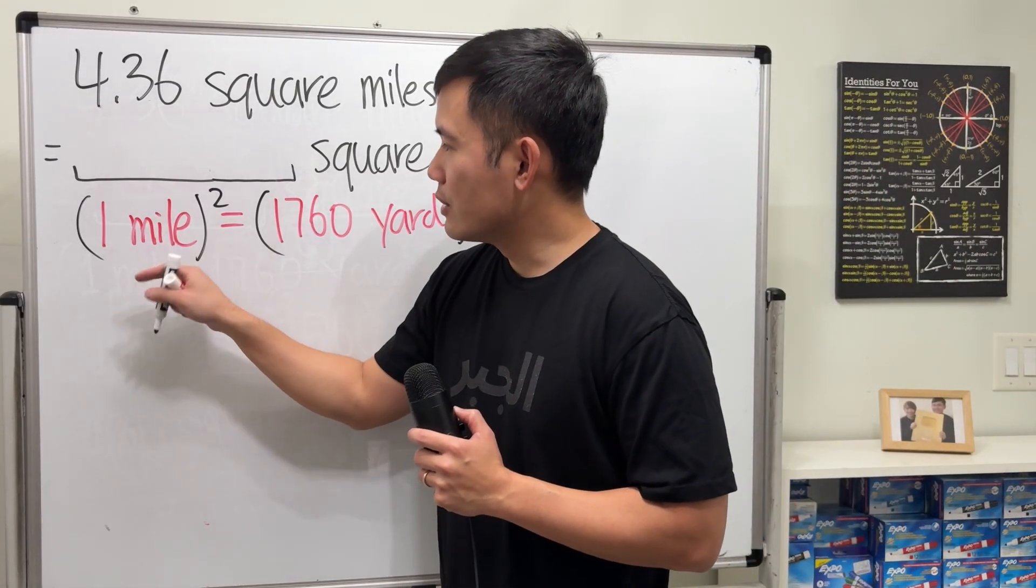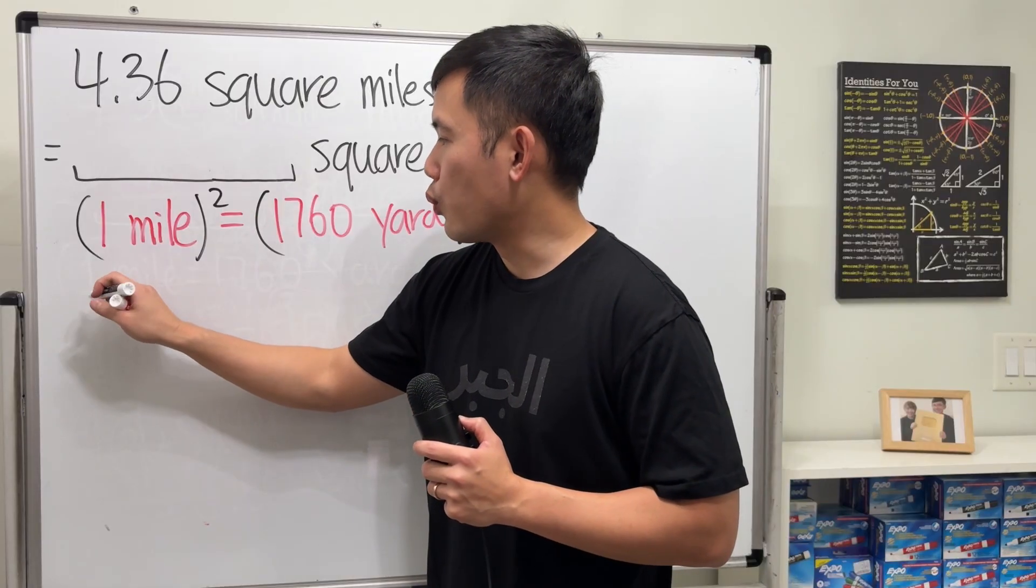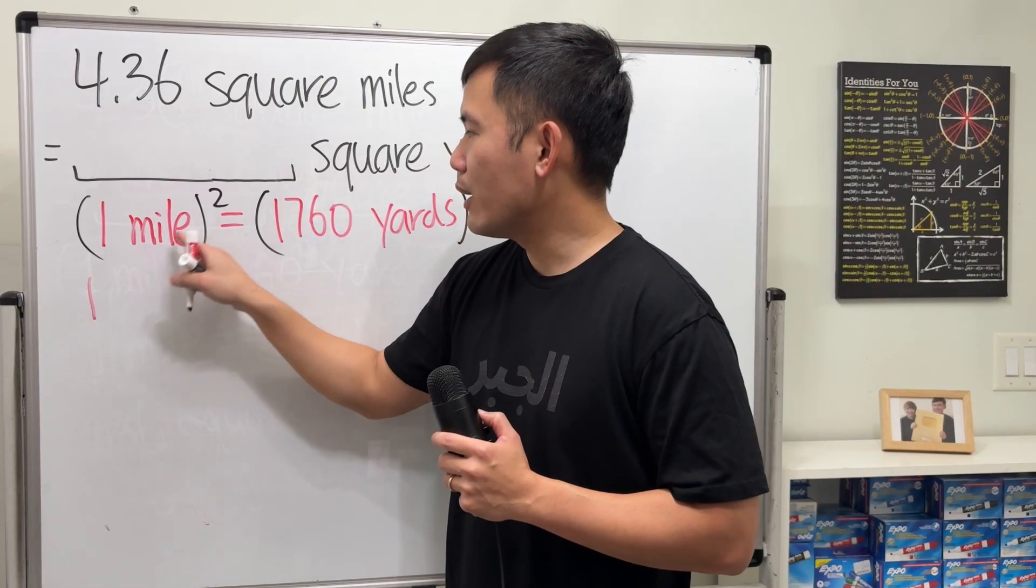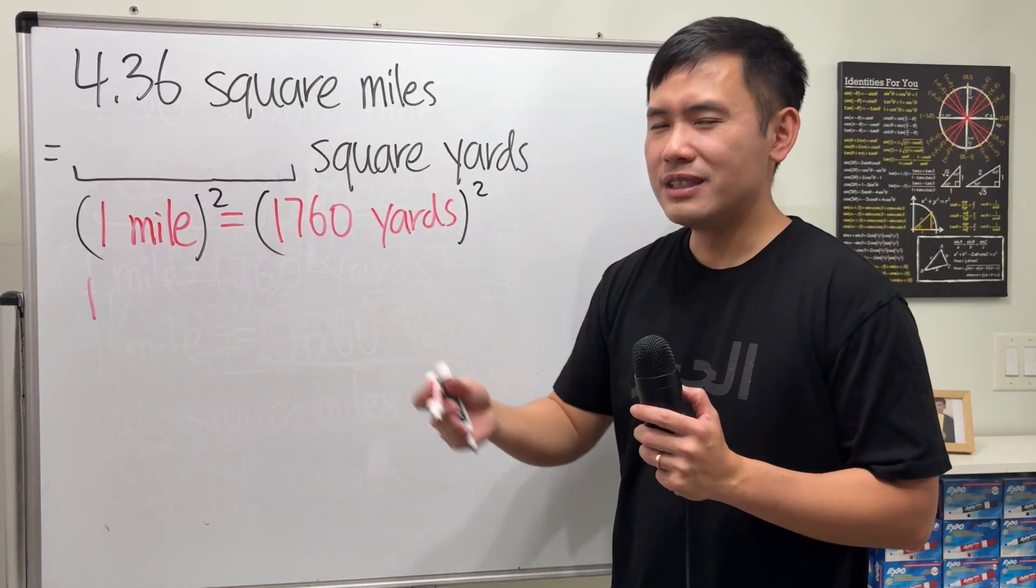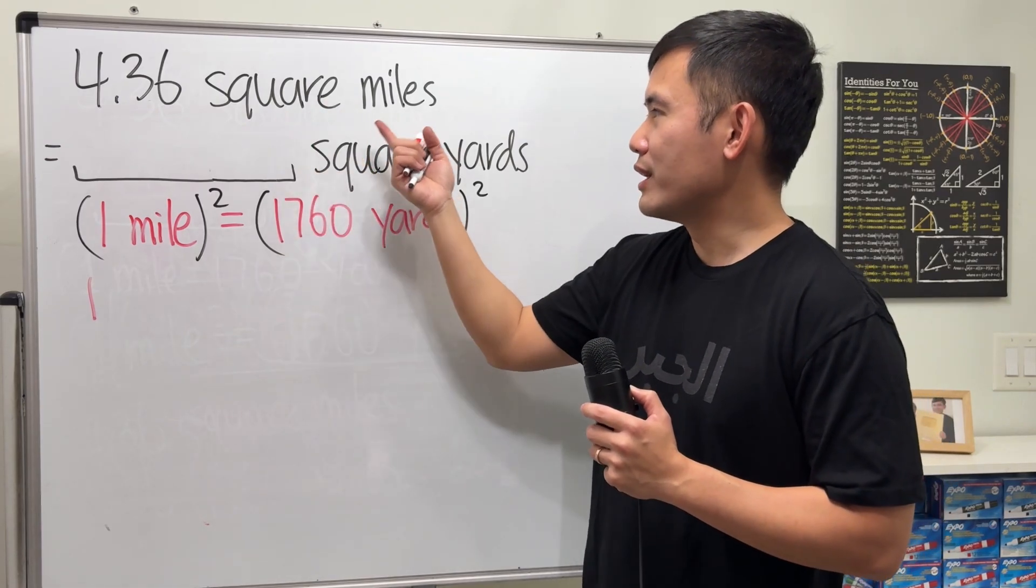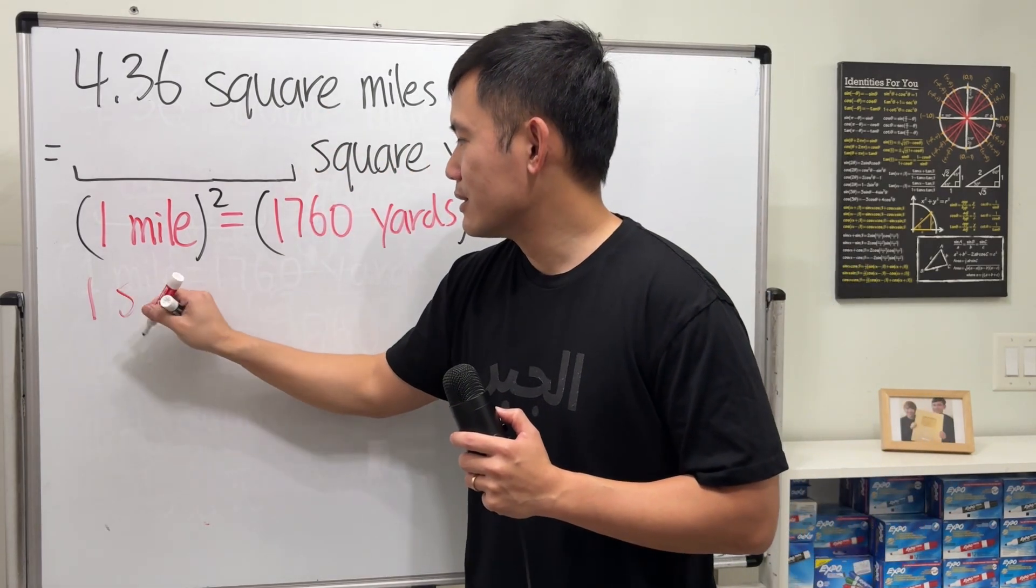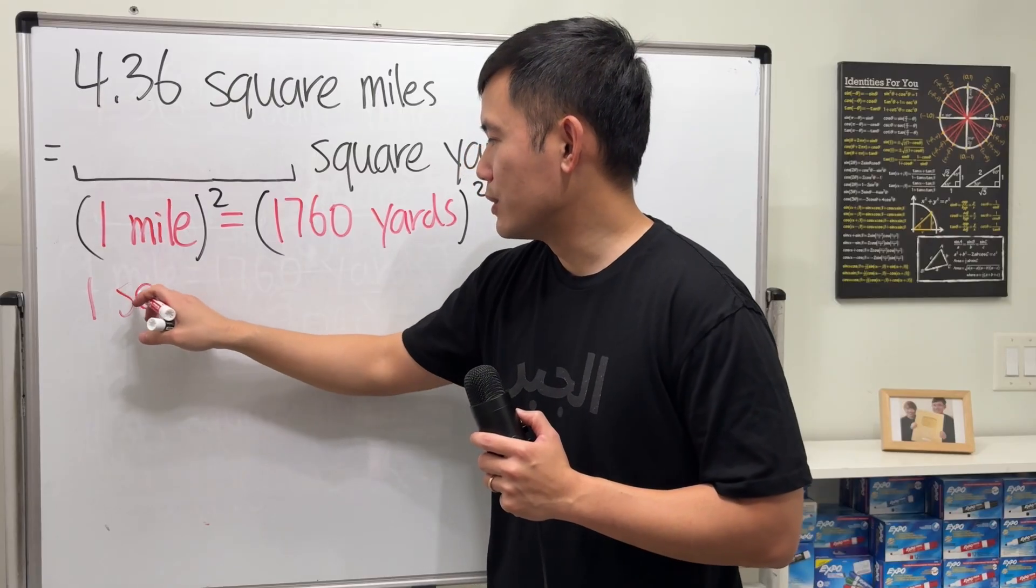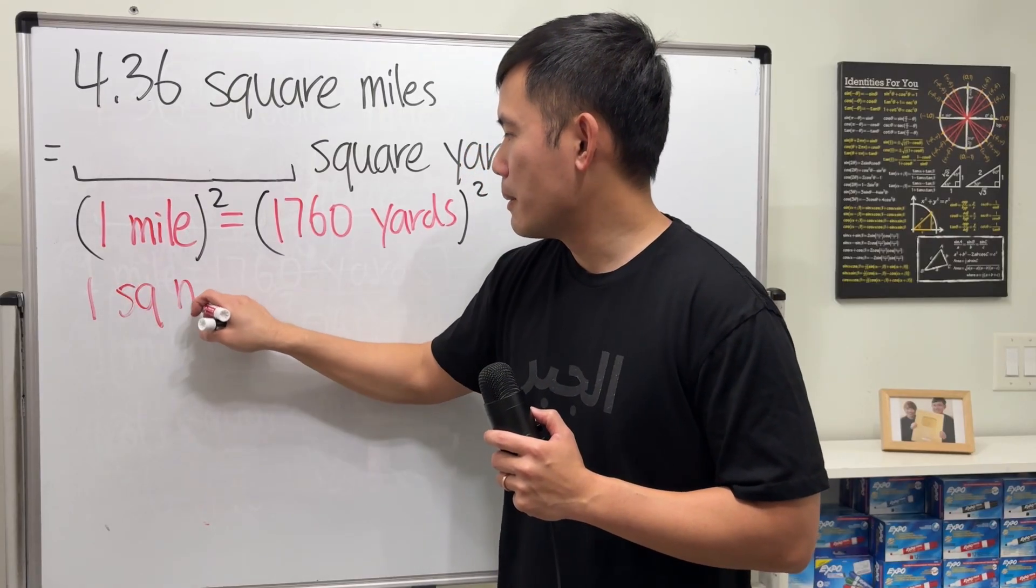So this right here is going to tell us 1 square which is just 1. And then mile square, mile times mile. It's mile square in math. But when you write it, you write it as square miles. So this is, I'm just going to put SQ, square mile.